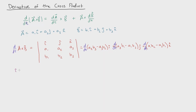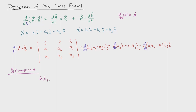Looking at the i component first — the derivative of the i component — we have to apply the product rule twice. When we take the derivative of this part, we get ȧ2 times b3 plus a2 times ḃ3. Then we take the derivative of the next term and get negative ȧ3 times b2 minus a3 times ḃ2. So we get four terms total from applying the product rule to the i component.